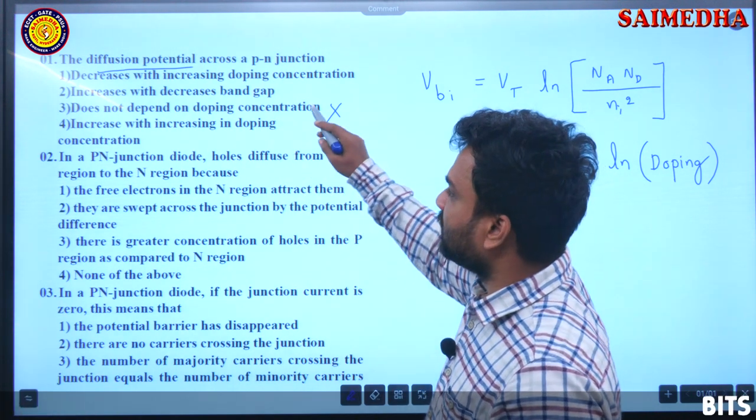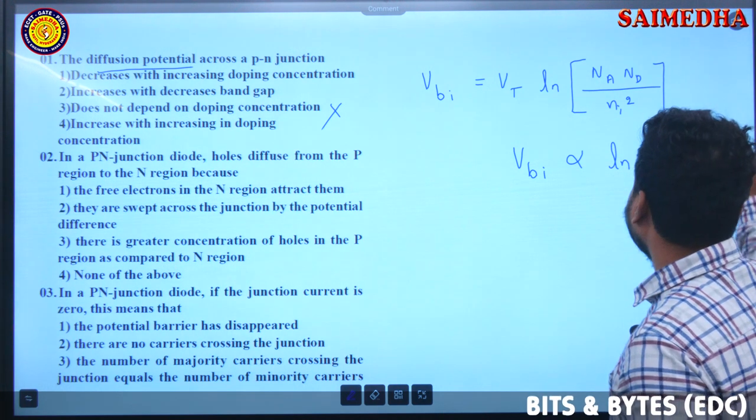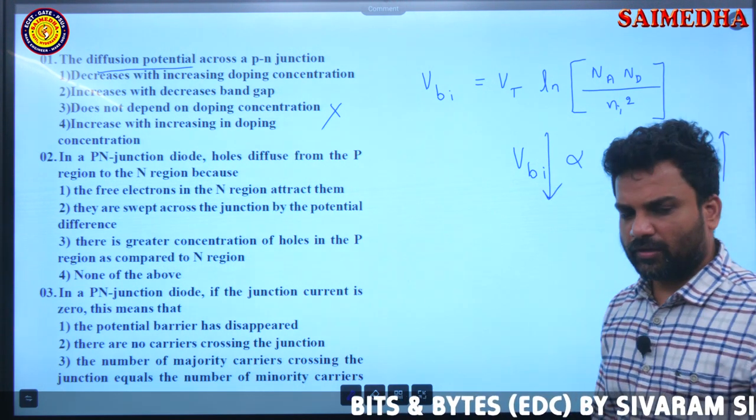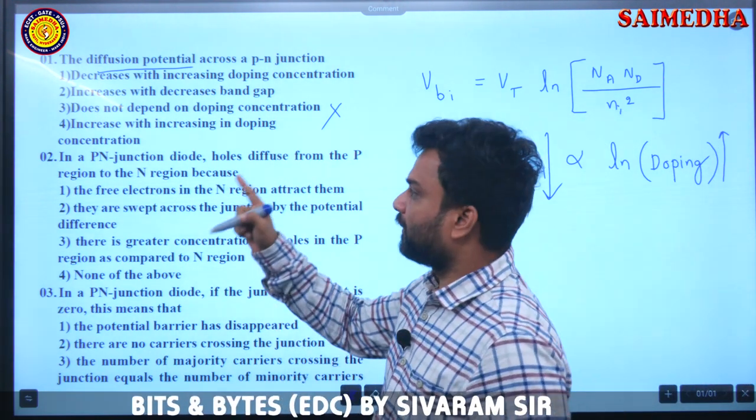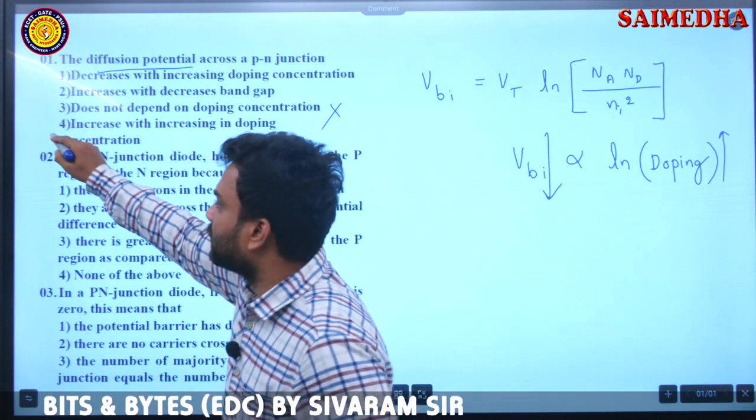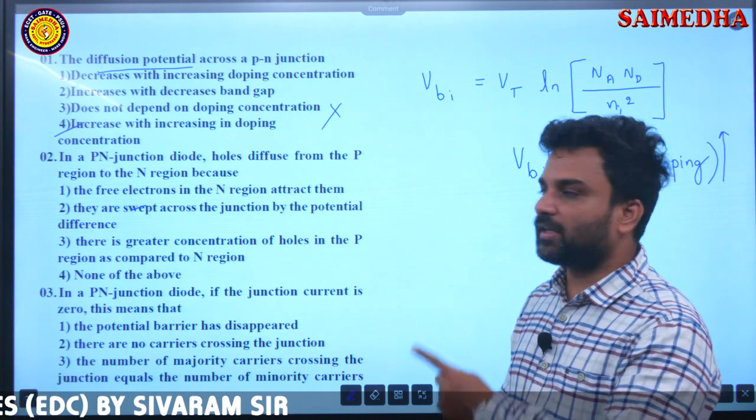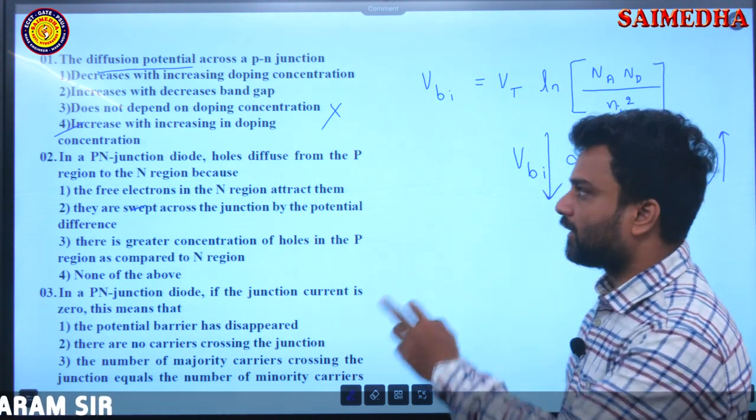Now, decreases with increase in doping concentration, doping concentration increase, VBI decrease. So option four is the correct answer. Okay students, next question.